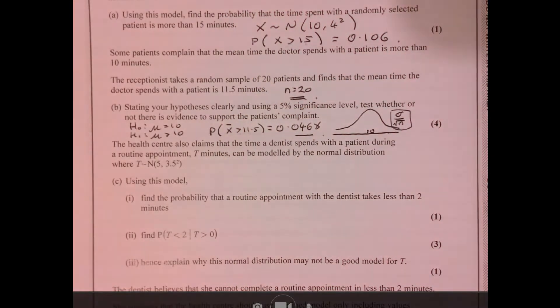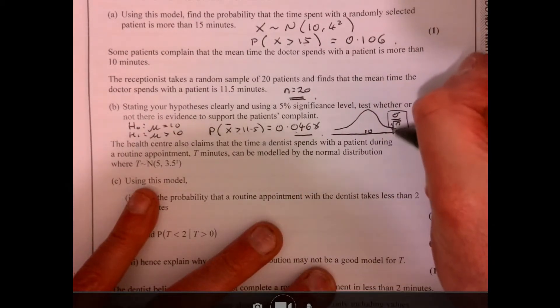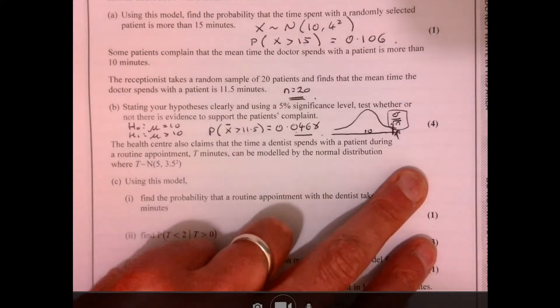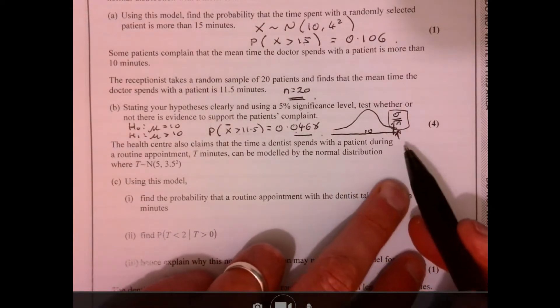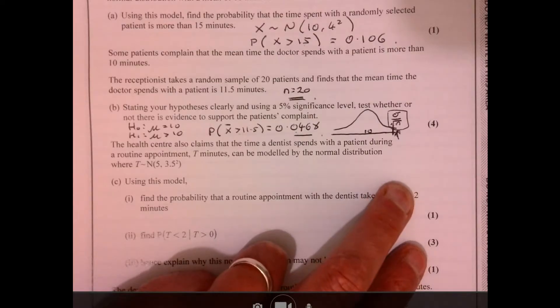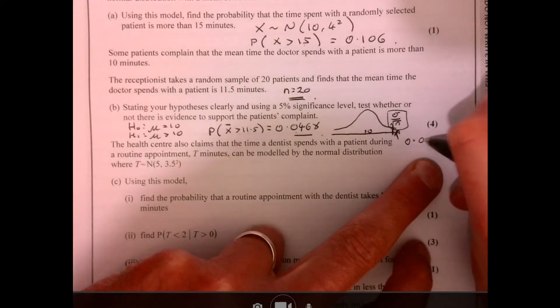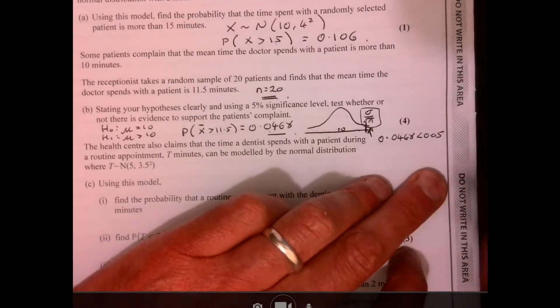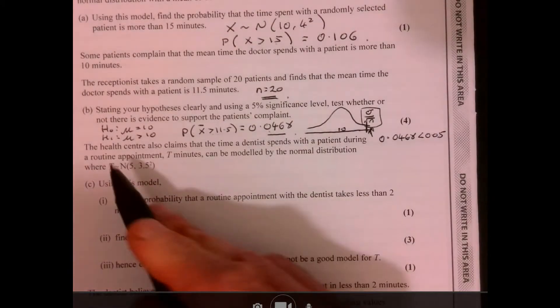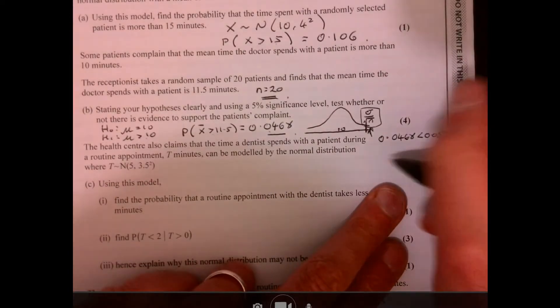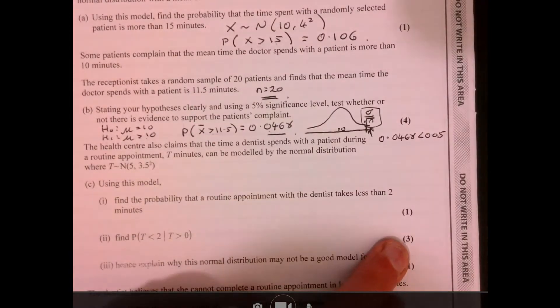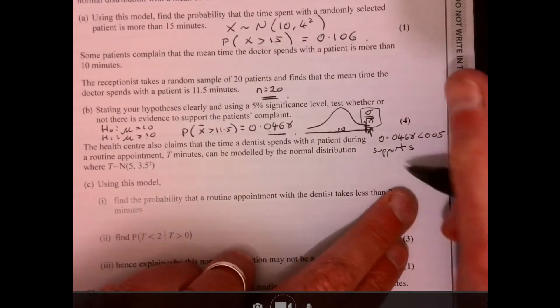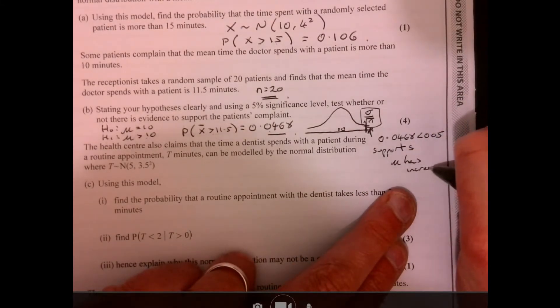Now we need to make sense of that. So what that means is if you imagine like the 5% line, that figure is in this section. So given those parameters, that would actually be maybe unusual for it to be in that section. So because 0.0468 is less than 0.05, that supports the alternative hypothesis. So write a longer conclusion there. Put it in the context. But basically, it supports that the mean has increased.